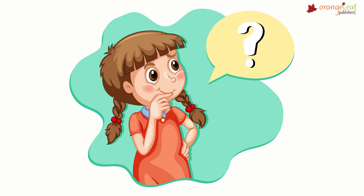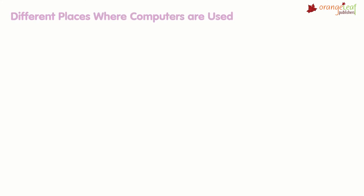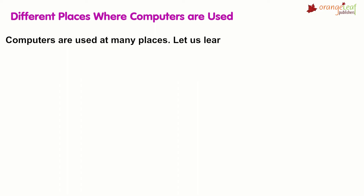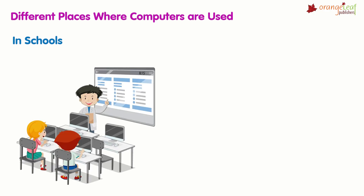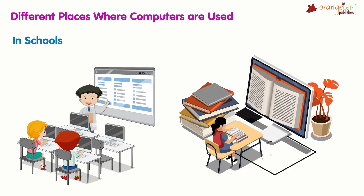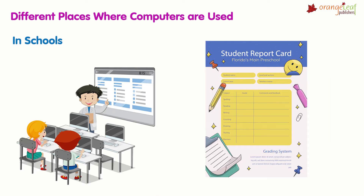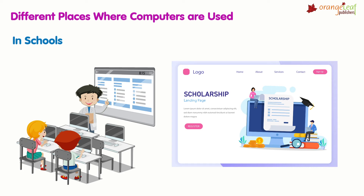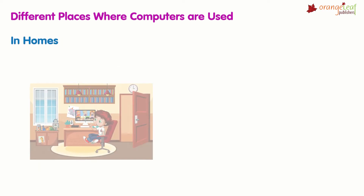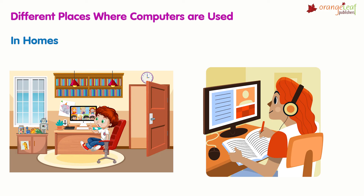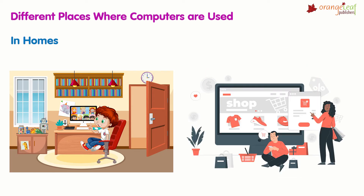Different places where computers are used. Computers are used at many places. In schools, computers are used to help teachers for virtual coaching, create worksheets and report cards, keep track of students' fees, and keep track of books in the library. In homes, computers are used for online work, listening to music, doing homework, online shopping, and playing games.